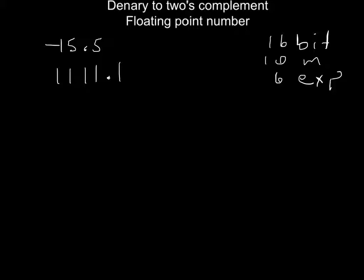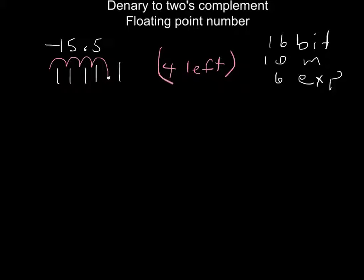The second thing I'm going to do is move the binary point so that the first digit after the binary point is a 1. In this case, I'm moving 1, 2, 3, 4 places to the left. I'm putting that in brackets because I'll need that information later.